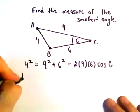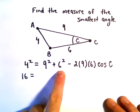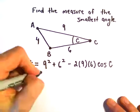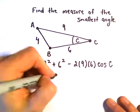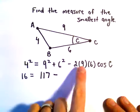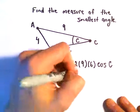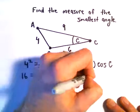So now just a little bit of arithmetic. 4 squared is 16, 9 squared is 81, 81 plus 36 is going to give us 117. 2 times 9 times 6, let's see, so 9 times 6 is 54. If you double that, you'll get 108, which will be cosine of C.